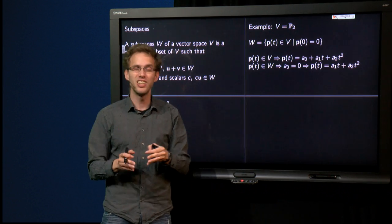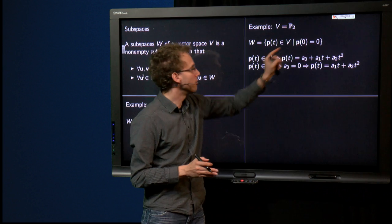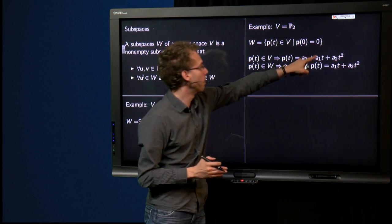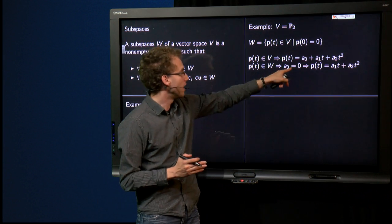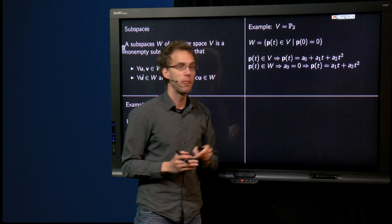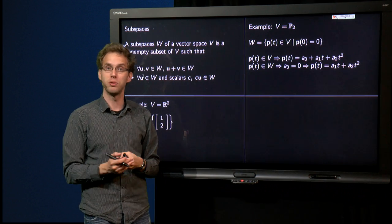Now, if you have this additional constraint that p(0) has to be 0, that means that if you plug in t equals 0, what comes out has to be 0, so that means that a₀ has to be 0. So if p lives in W, then it is of the form a₁t + a₂t².